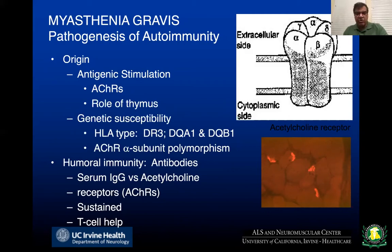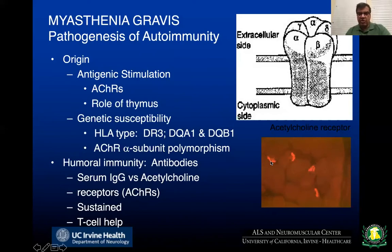We also know that there is alpha subunit polymorphism of the receptor that modulates disease phenotype in myasthenia gravis. More importantly, we know that in myasthenia gravis there are known antibodies that are pathogenic. These are serum IgG antibodies directed against the acetylcholine receptors. It's a sustained immune response, and it is dependent on T-cell help to sustain itself. The figure shown here depicts acetylcholine receptors on a muscle biopsy stained with alpha-bungarotoxin.